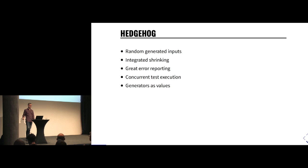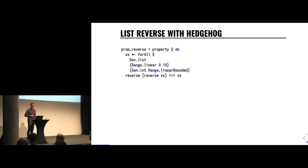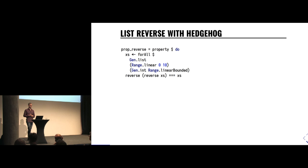The canonical example of property-based testing is that if you reverse a list twice, you'll get the same list back. In Hedgehog, it looks like this — the super simple example everyone uses as a first one. For all lists ranging from the empty list up to ten elements, with elements being integers in the range called linear bounded — meaning integers within the bounds of the data type — for all such lists Xs, if we reverse Xs and reverse them again, we'll get back the original Xs.